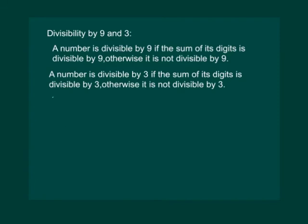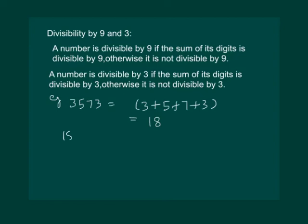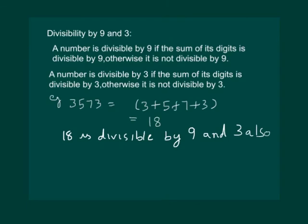Let us take another example: 3573. The sum of its digits is 3 plus 5 plus 7 plus 3, which equals 18. Now 18 is divisible by both 9 and 3, so we can say that 3573 is divisible by both 9 and 3.